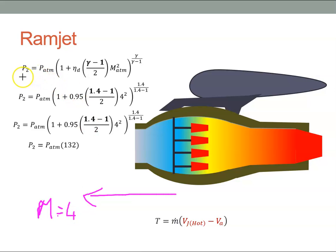And this is the stagnation pressure formula. It's saying that the pressure P2, so the pressure here at P2, is the atmospheric pressure times 1 plus the efficiency of the duct times gamma minus 1 over 2 times the Mach number squared, to the power of gamma over gamma minus 1.